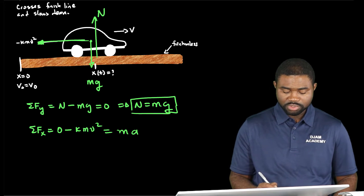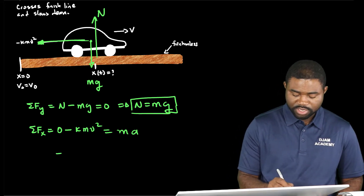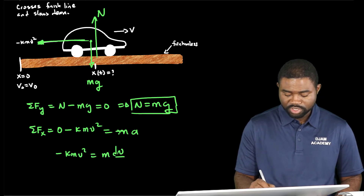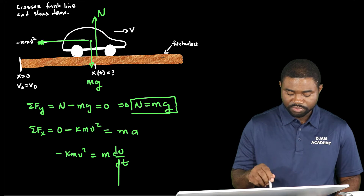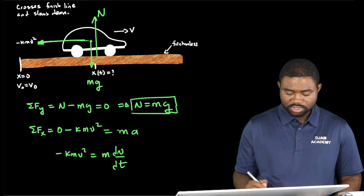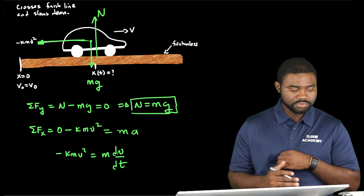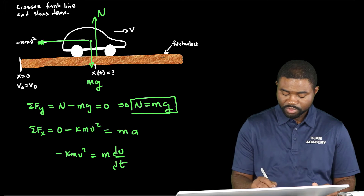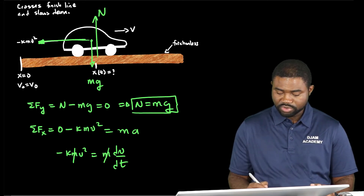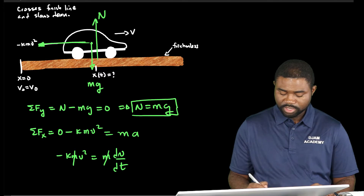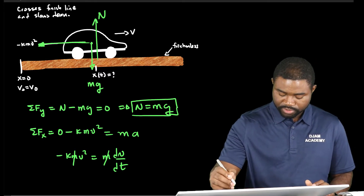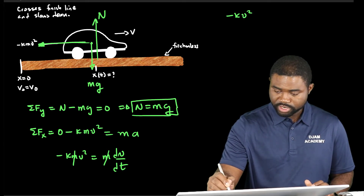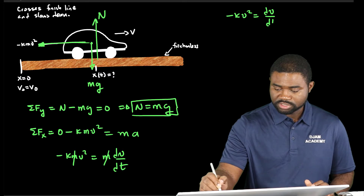This means that negative kmv² equals m times dv/dt. This is a first-order differential equation in terms of v. The masses cancel, leaving us with negative kv² equals dv/dt.